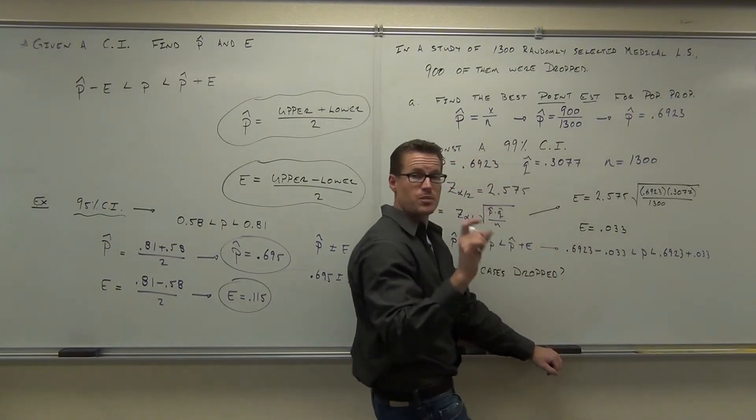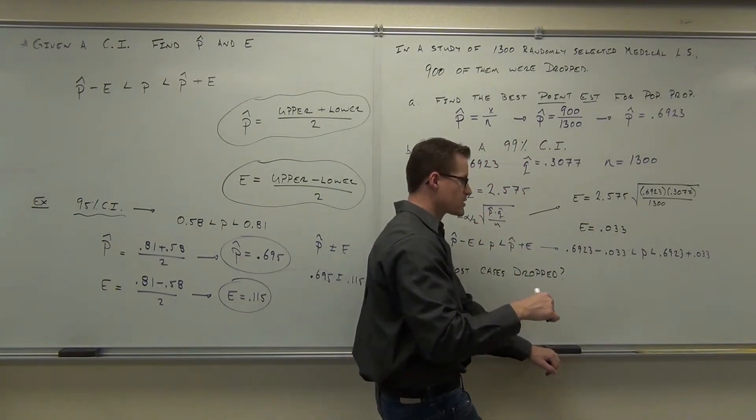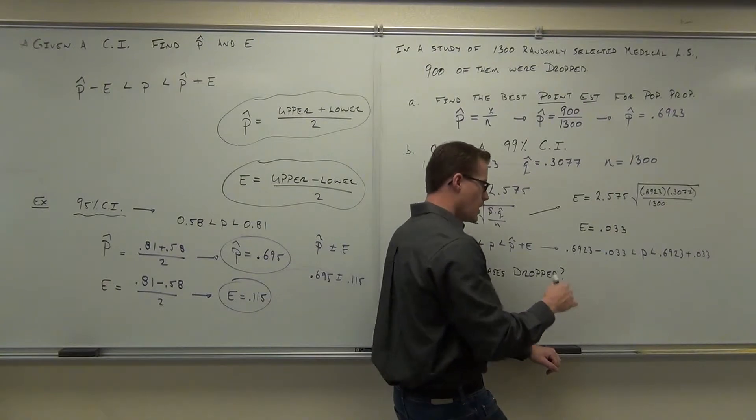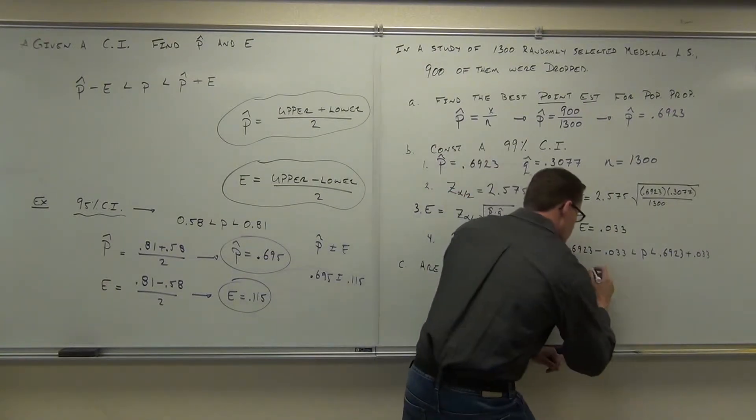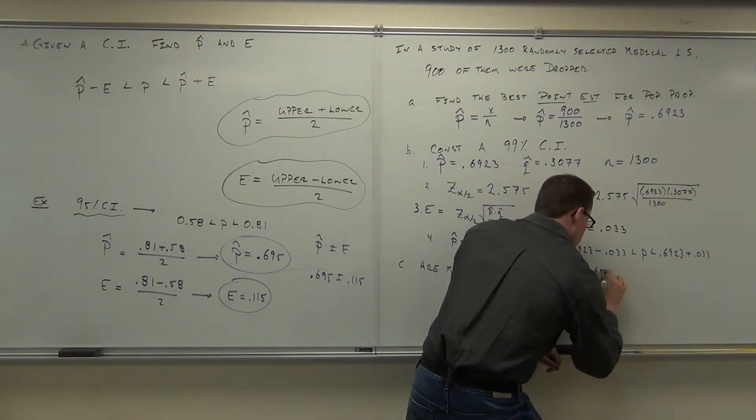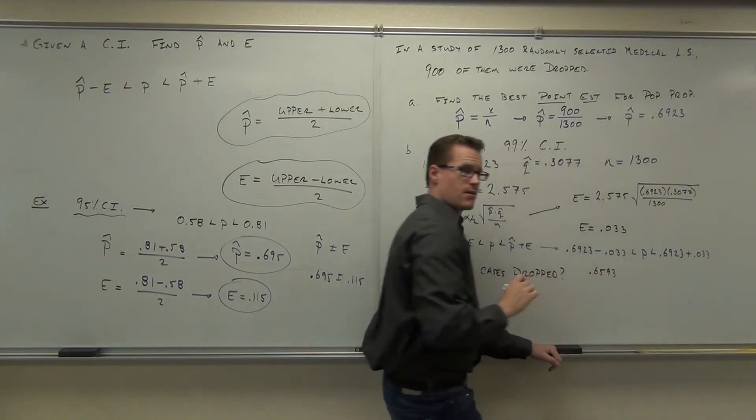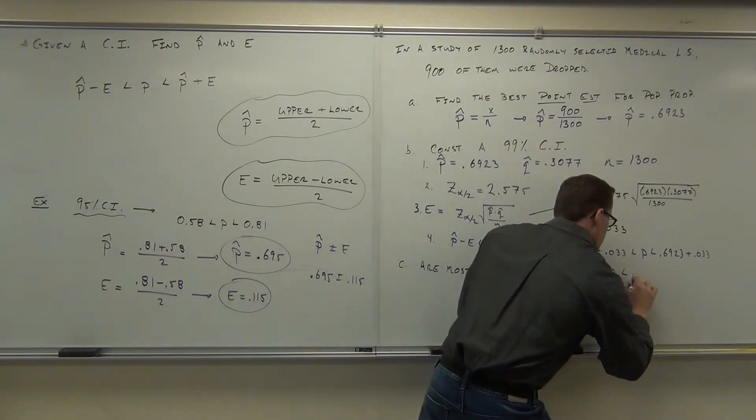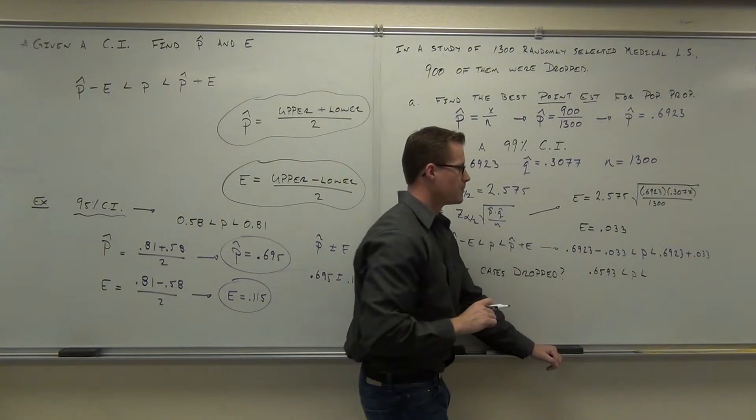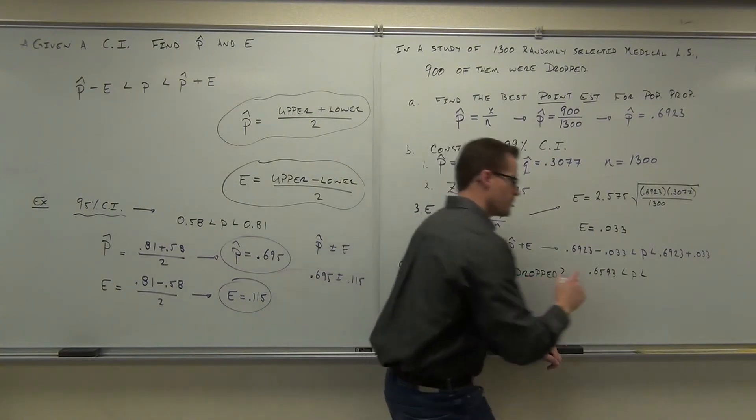0.6923, that's your p hat minus your e of 0.033. How much does that give me, please? Less than p? Less than 0.7253.